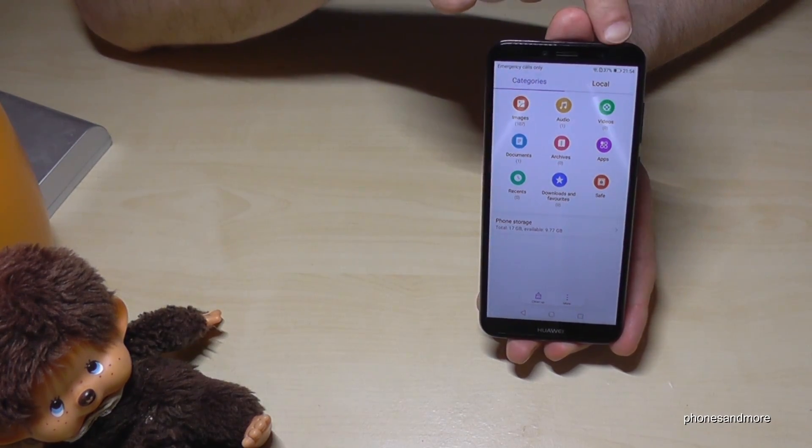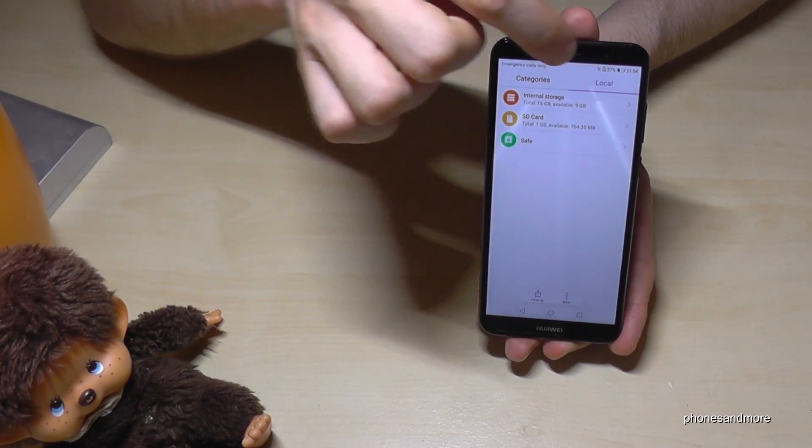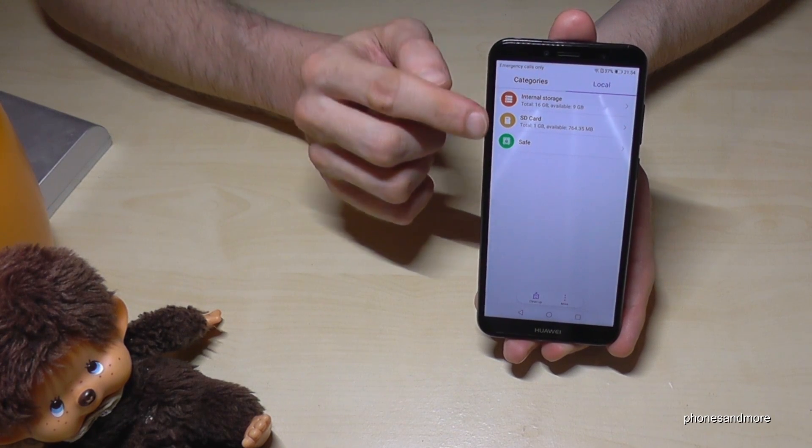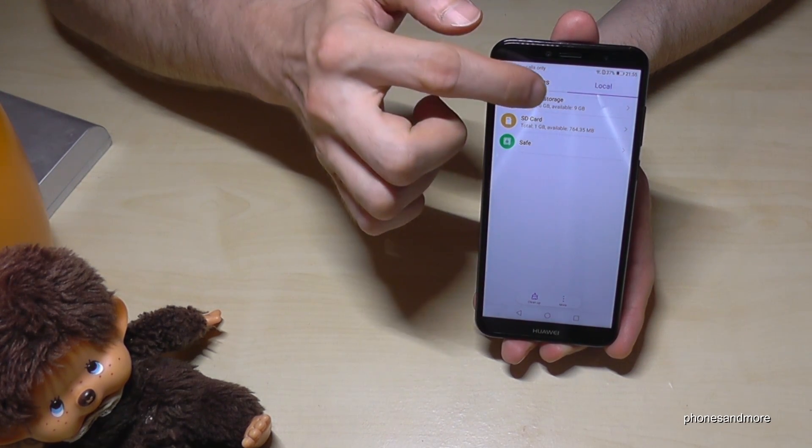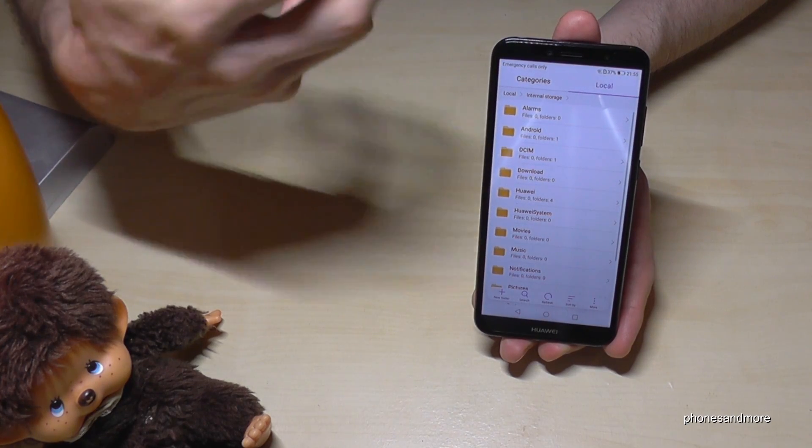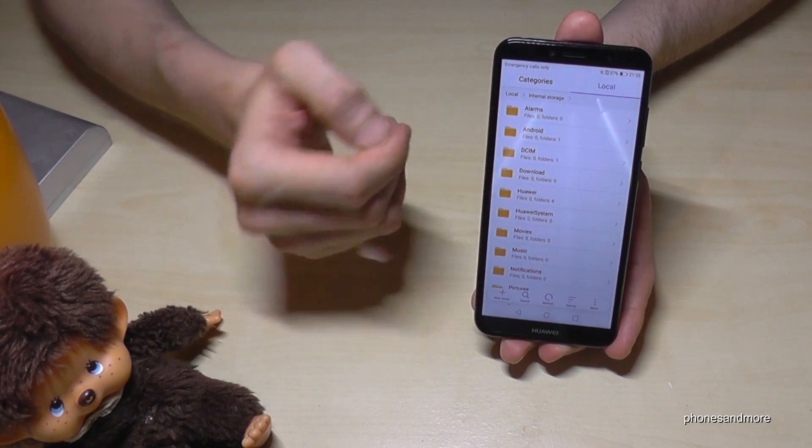Okay, but we need the local one to transfer some data and you have now the internal storage and the SD card separated. We go next to the internal storage because we want to transfer something from the internal storage.